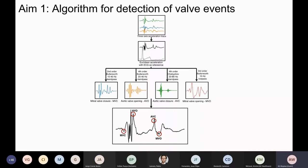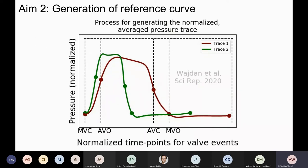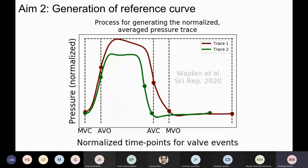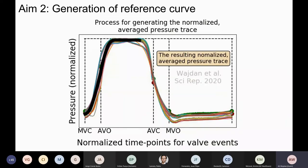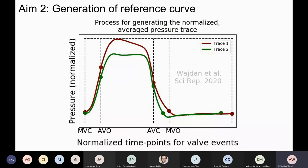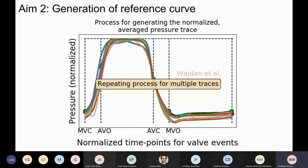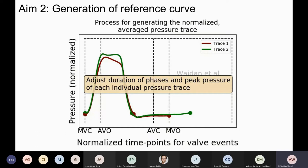And that takes us to the second aim of the study, the generation of the reference curve. Once we had the points in a multiple of traces, we generated a reference curve by averaging a normalized pressure trace. The black line in this video shows the... The points were adjusted to an arbitrarily selected time length, and the peak pressure was normalized so that all the pressure traces had the same peak value. So this was done for multiple pressure traces until we could average the traces to get the reference curve, the black line, which was then used to generate pressure traces for other detected valve events.